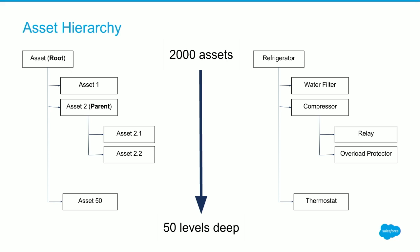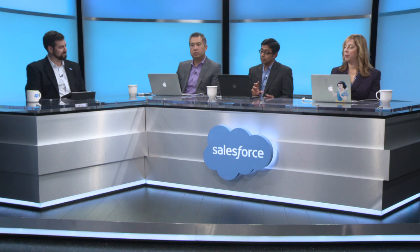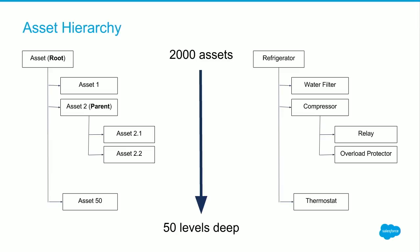Diving a little deeper into the object itself, there are two key fields to be aware of. First is the root asset, and the second is the parent asset. The parent-child relationship needs no explanation — it's pretty straightforward. But I'd like to spend some time talking about the root asset. This is a special asset which is system-owned, meaning the platform owns it, sets it, and maintains it for you. However, you can access this information either on screen or via APIs. The root essentially means it is your big asset — in this case, the refrigerator — and all of the other component assets are now part of this tree hierarchy.